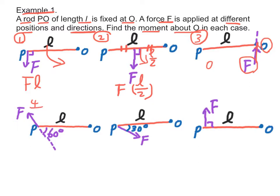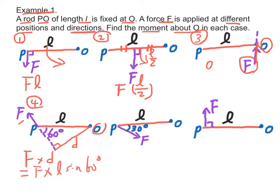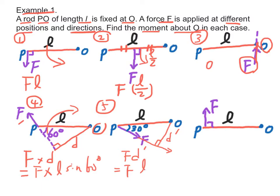For case 4, the moment of the force above point O is equal to F times perpendicular distance D, which is equal to F times L sin 60 degrees, and this is clockwise moment. For case 5, the moment of the force above point O is F times D, where D equals L sin 30 degrees, and this is anticlockwise moment. For case 6, the moment of the force above point O is F times L, which is clockwise moment.